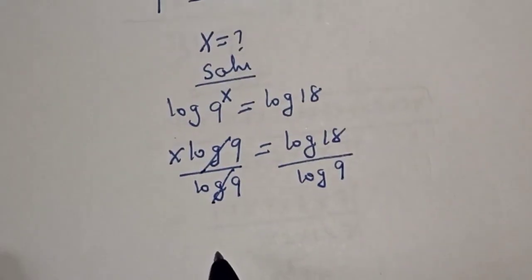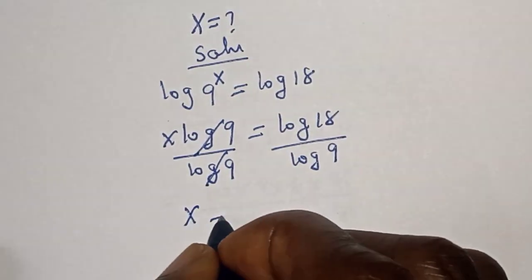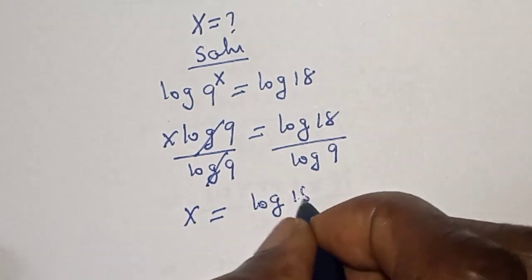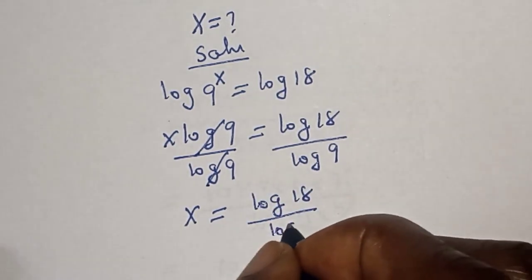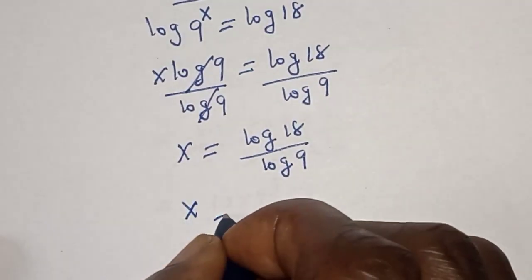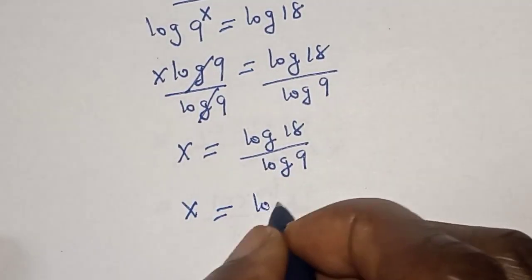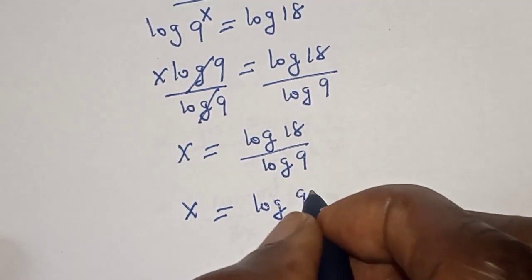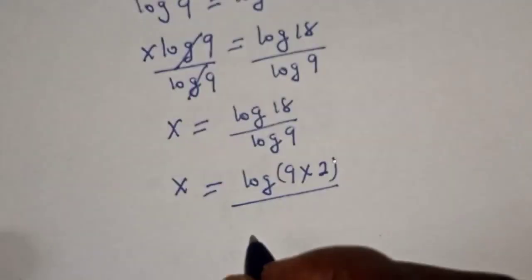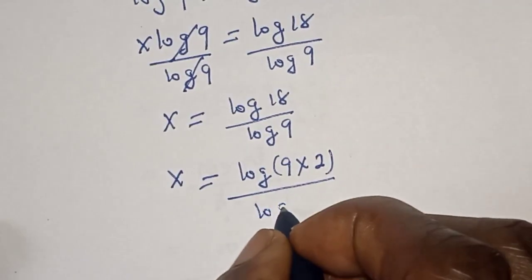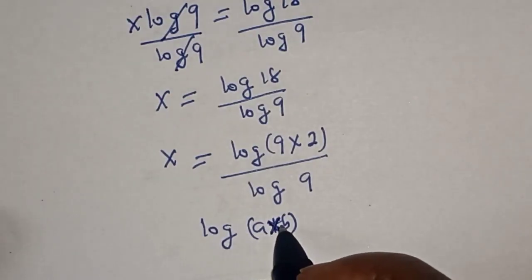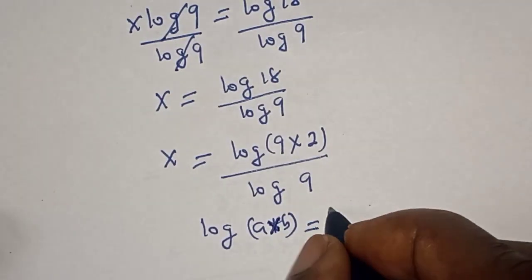Dividing by log 9 on both sides, those cancel, so s is equal to log 18 over log 9. Then s is equal to — since 18 is 9 times 2 — log of 9 times 2 over log 9.